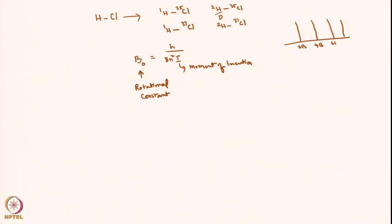This is 0 to 1, 1 to 2, J values, J equals 0 to J equals 1, J equals 1 to J equals 2, 2 to 3, 3 to 4, etc., 8B. And the separation between them is 2B. This is pure rotational spectrum.